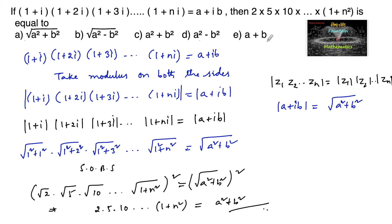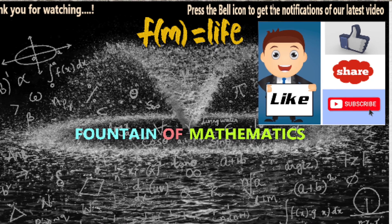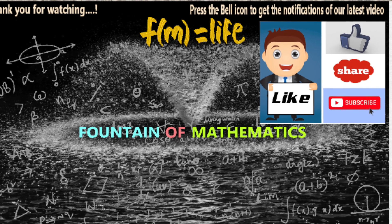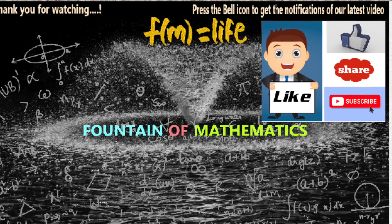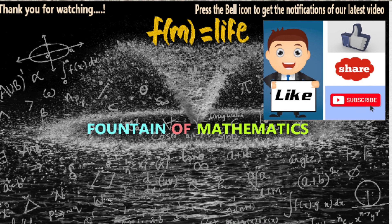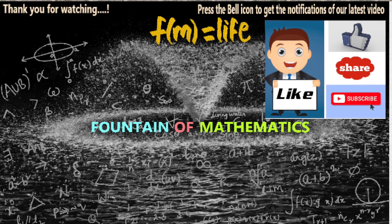So we can say the product 2 into 5 into and so on (1+n²) is equal to a²+b², which is the third option. Please like, share, subscribe, and support us. Thank you.